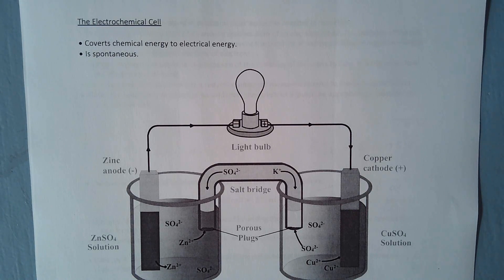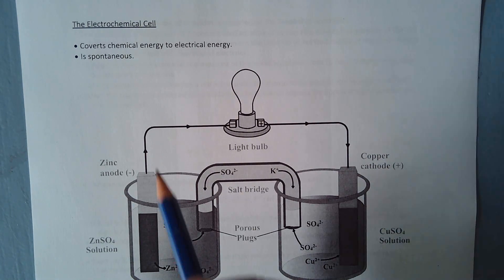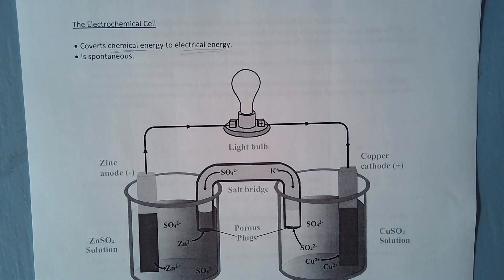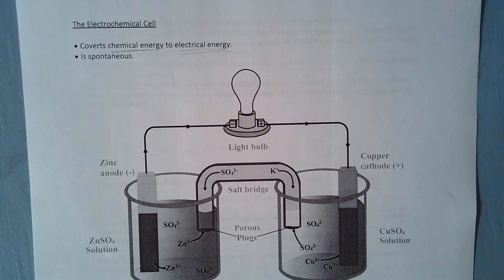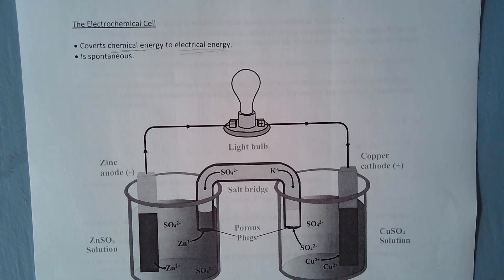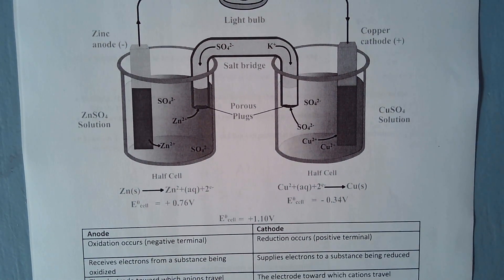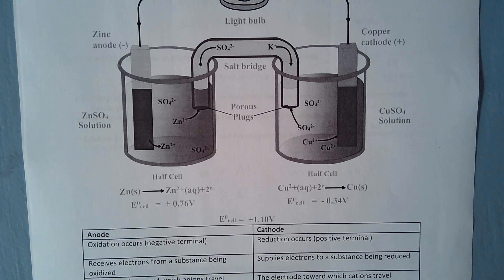With the electrochemical cell, this is essentially a battery, and what it's doing is taking chemical energy and converting it to electrical energy. In terms of a spontaneous redox reaction — spontaneous means you don't need any input energy to get the reaction to occur, it just occurs on its own — and then that gets converted to electrical energy. Let's look at how this works.